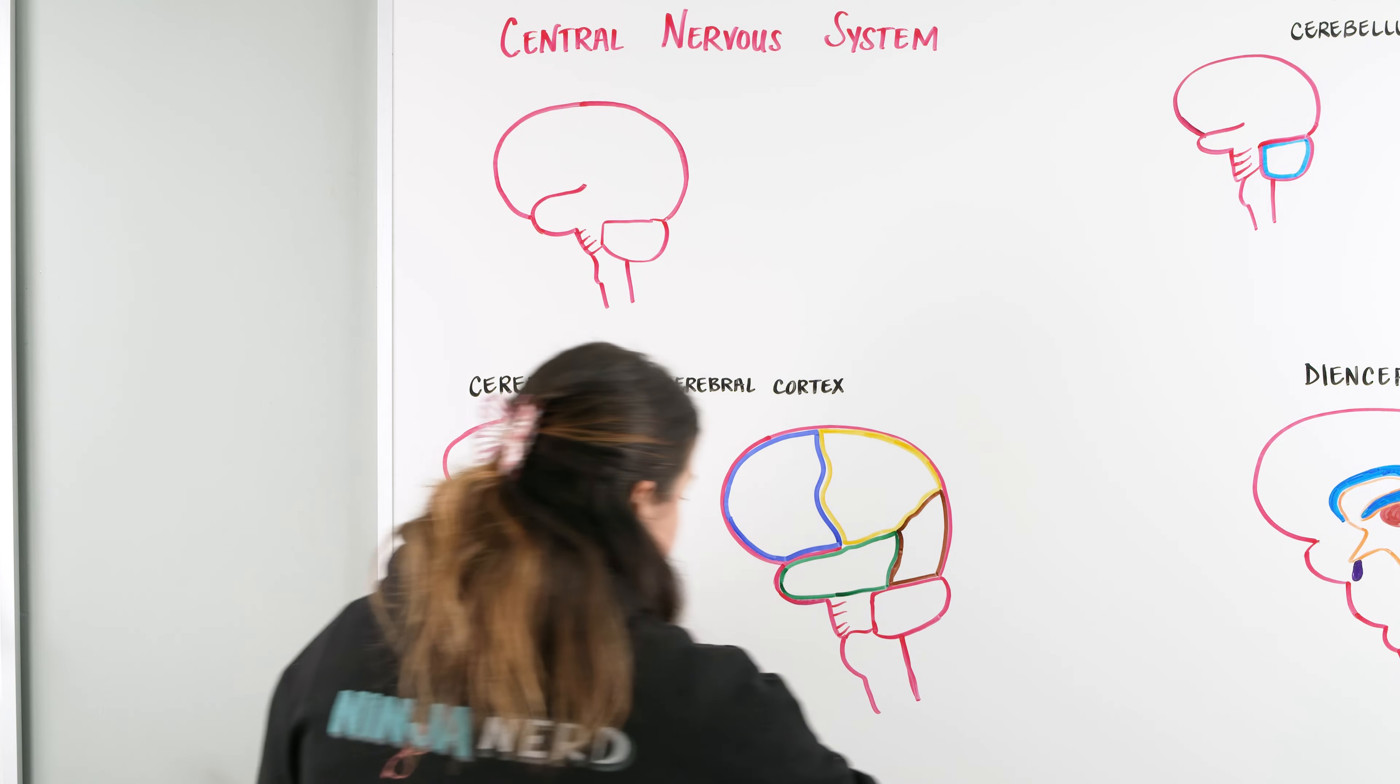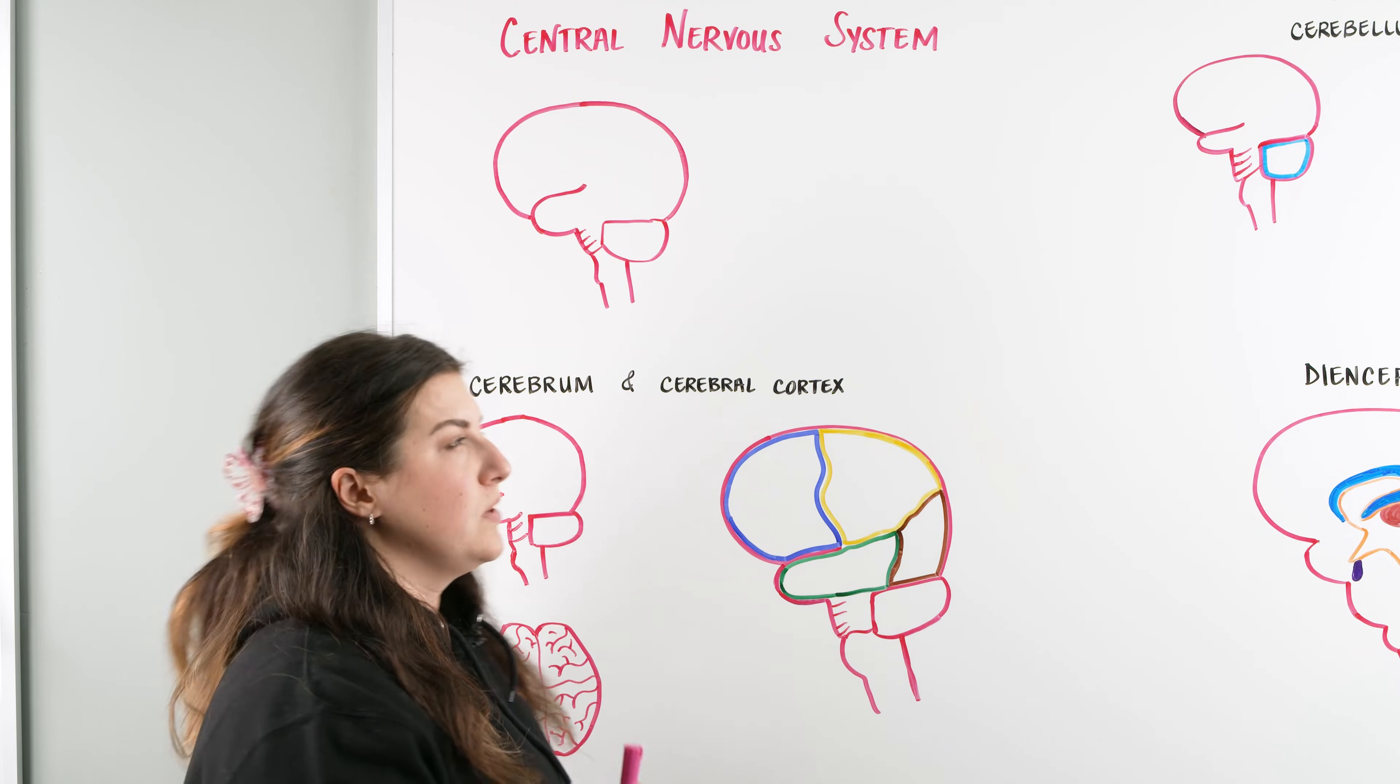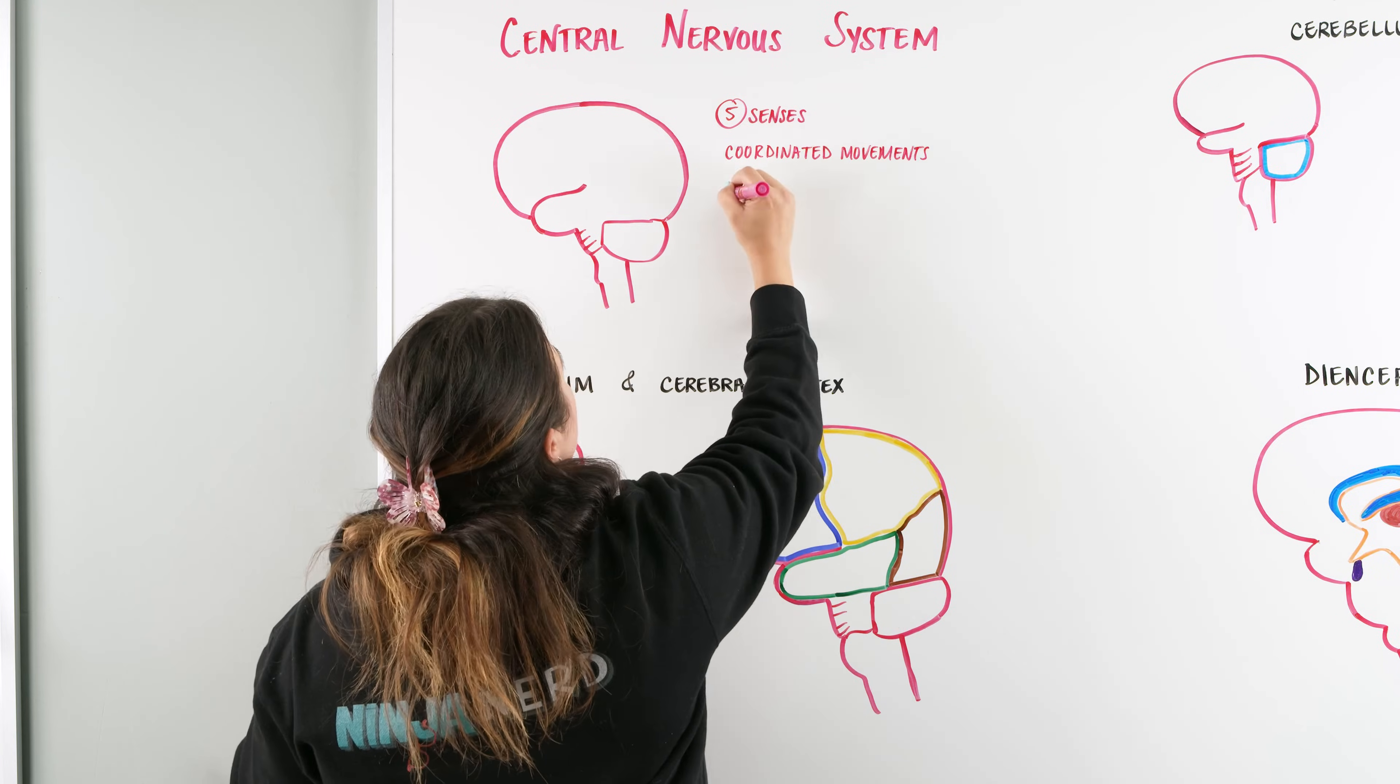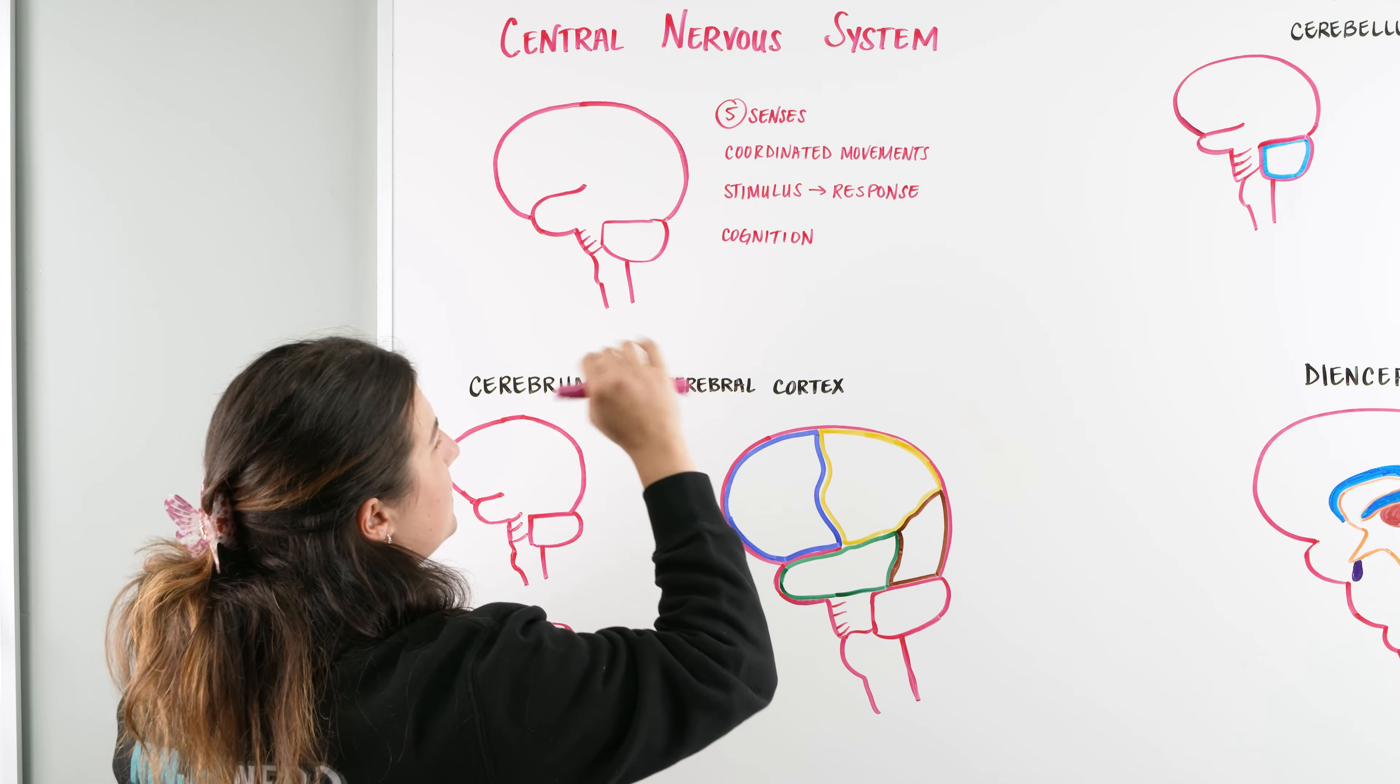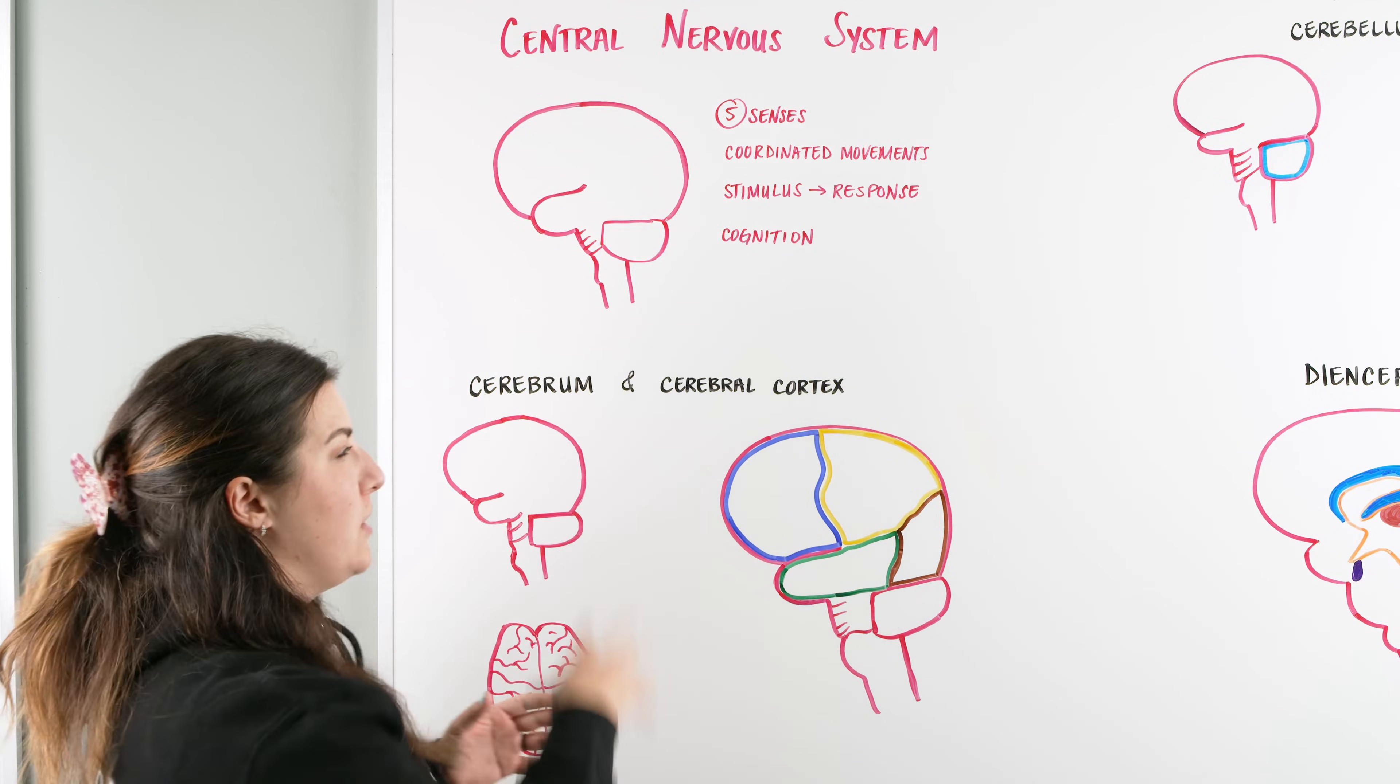When we're talking about the brain, we want to focus on those five senses: sight, hearing, touch, taste, and smell. We also want to think about coordinating movements and getting that stimuli. We're looking at five senses, coordinated movements, stimulus plus response, and also cognition. We're going to break it down and quickly go over the anatomy and the function of each area of the brain.